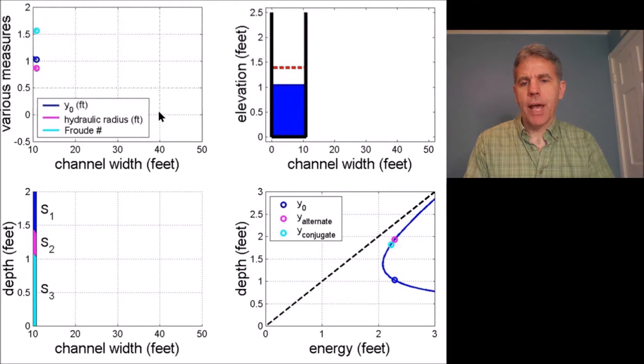In the upper left we have three quantities shown and you'll see that as the channel gets wider over the course of the animation these quantities will vary. The quantities shown are the normal depth, the hydraulic radius, and the Froude number.